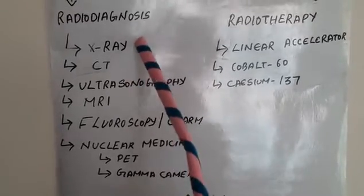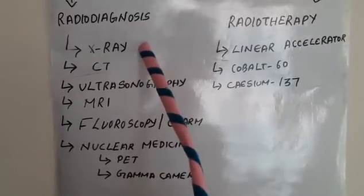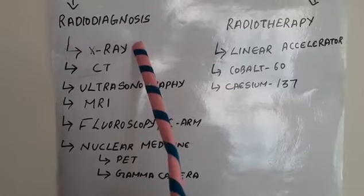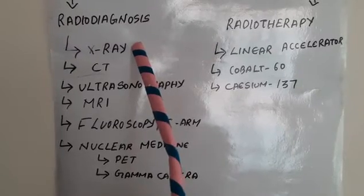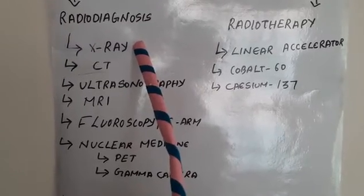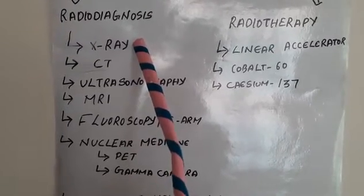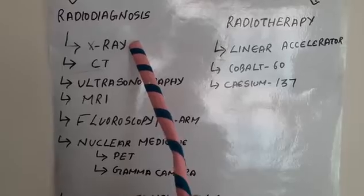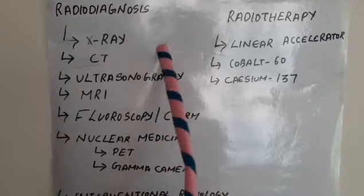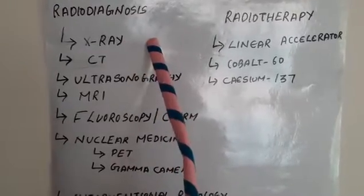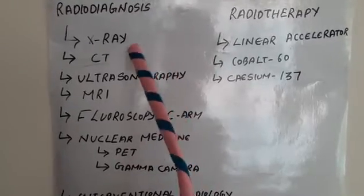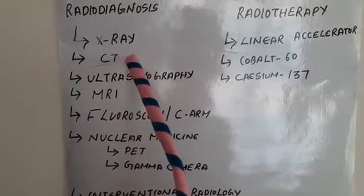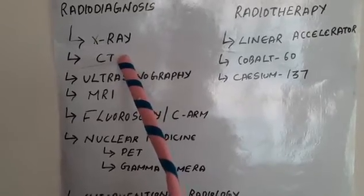The difference between X-ray and CT: in X-ray we get a two-dimensional projection of the organ or body area being studied, whereas in CT we get cross-sectional images.